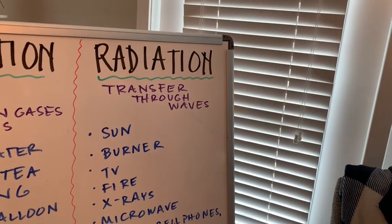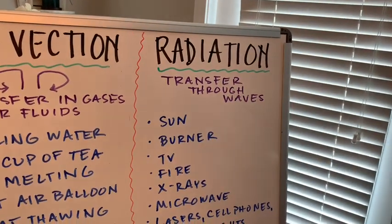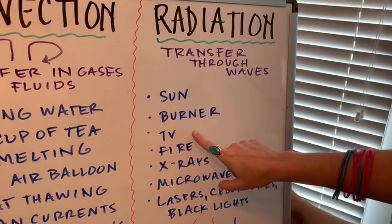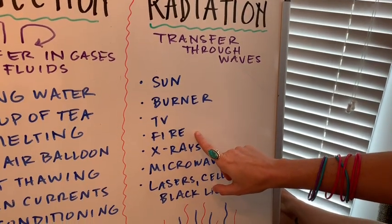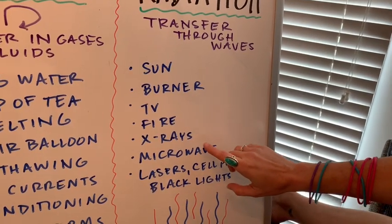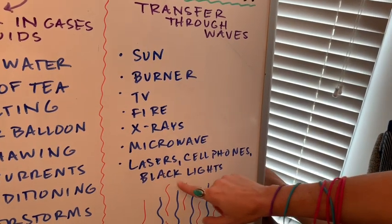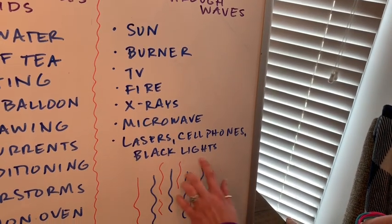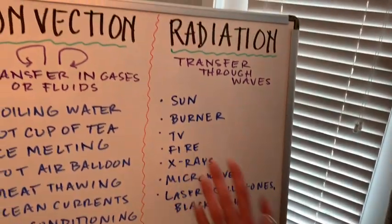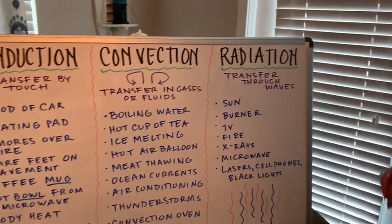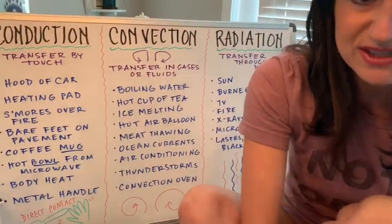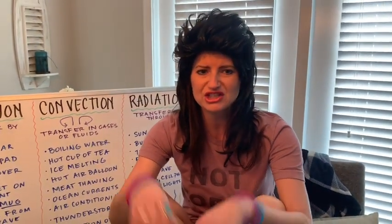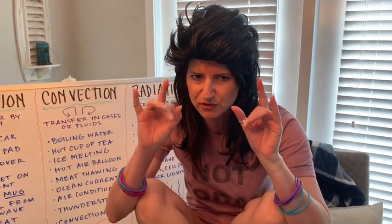Radiation is our last one — this is transfer through waves. You've got the sun, a burner on the stove. You can also have radiation transfer through TVs, fire — anything you'd warm your hands with. X-rays, microwaves, lasers often used in surgery, cell phones sending out radiation waves, and black lights. We're going to quiz on some of these. You can grab a mate or quiz yourself. Press pause if you want to do that.